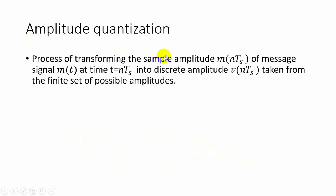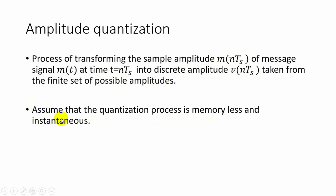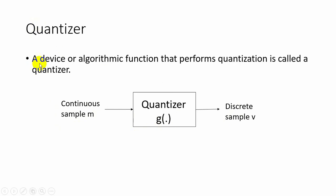In amplitude quantization, the message signal m is sampled at time t equal to nTs, giving the sample amplitude m(nTs). Then it is quantized — we get the discrete amplitude v(nTs) from the final set of possible amplitudes. The quantization process is assumed to be memoryless and instantaneous, meaning it depends only on the present values. A device or algorithmic function that performs quantization is called a quantizer.